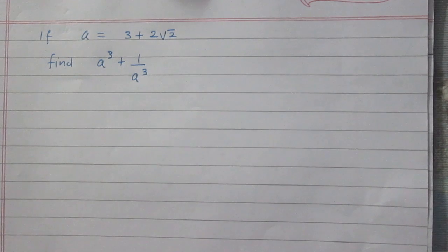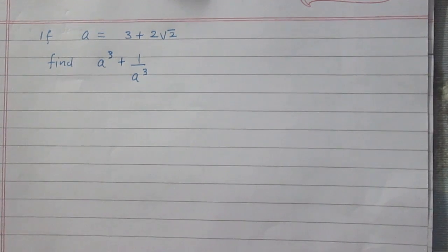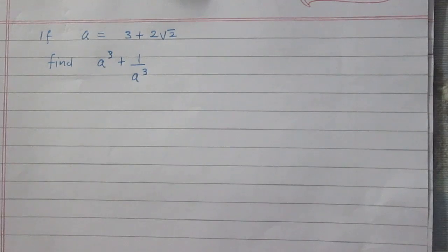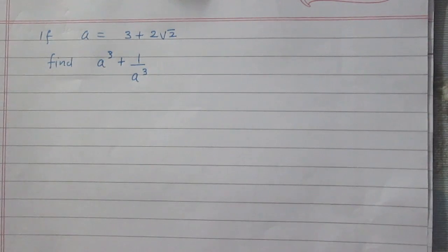If a is equal to 3 plus twice of square root 2, then find a cube plus 1 upon a cube.